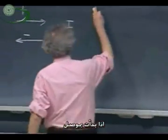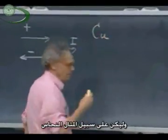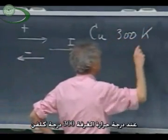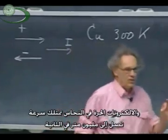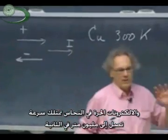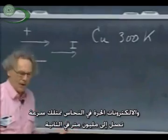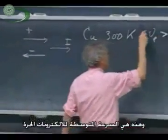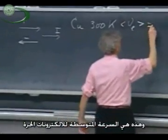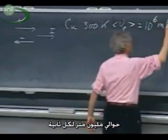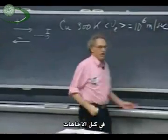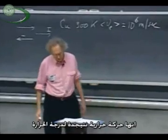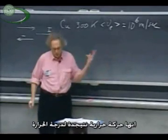If I start off with a conductor, for instance copper, at room temperature, 300 degrees Kelvin, the free electrons in copper have a speed, an average speed of about a million meters per second. It is in all directions. It's a chaotic motion. It's a thermal motion. It's due to the temperature.